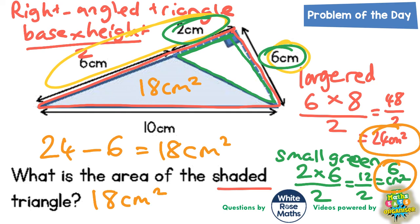Just to recap: the shaded triangle is 18 centimeters squared, and the small green one is six centimeters squared. Those two together give us 18 plus six, which is 24 centimeters squared — the area of the large red triangle. The measurements of the red triangle are base six, height eight: six times eight is 48, divided by two is 24. That 24 makes sense because it's 18 plus six. So the final answer: area of the shaded triangle is 18 centimeters squared.